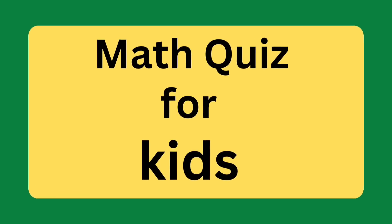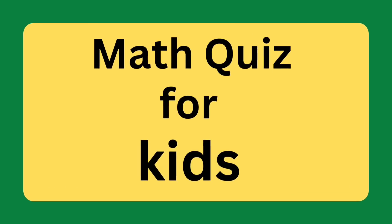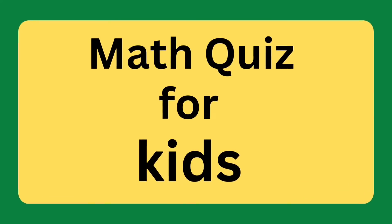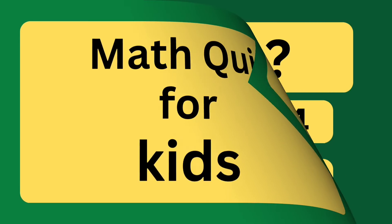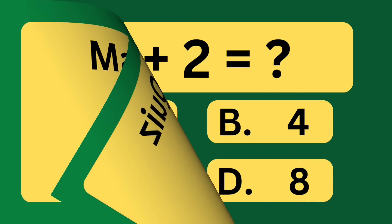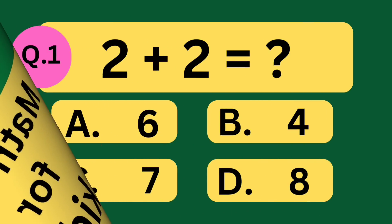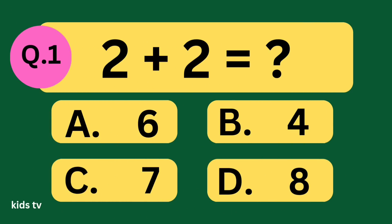Math quiz for kids. 2 plus 2 equal what? A: 6, B: 4, C: 7, D: 8.